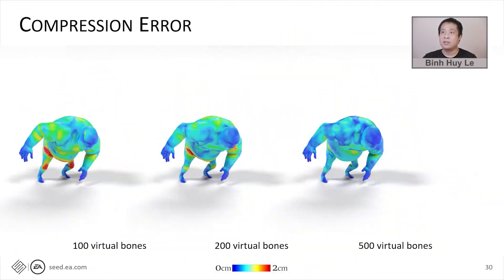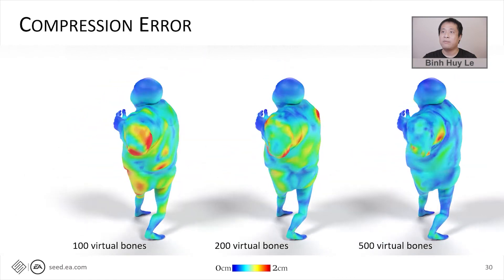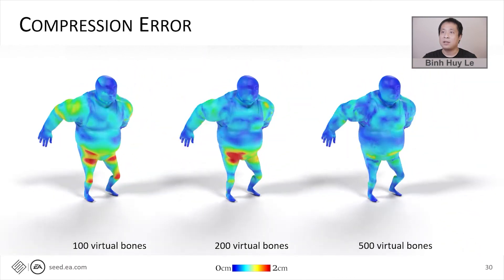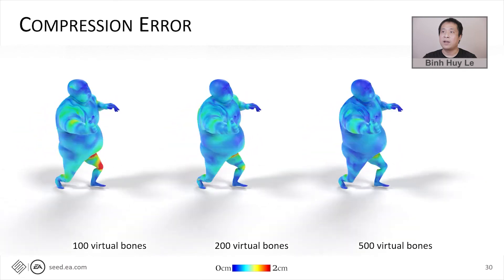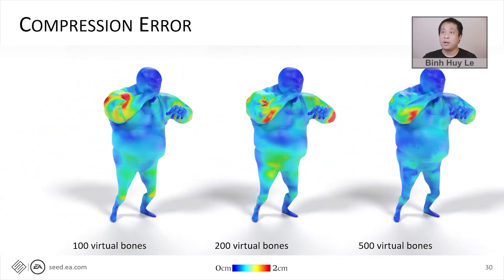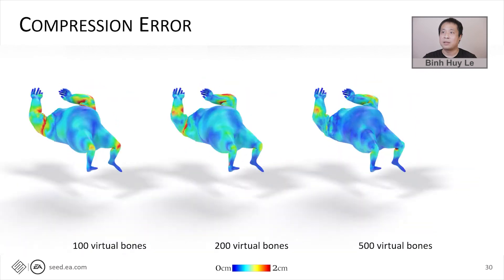Here's a visualization of the compression error with different numbers of virtual bones. The height of this character is 185 cm, so the relative error here is mostly smaller than 1%.